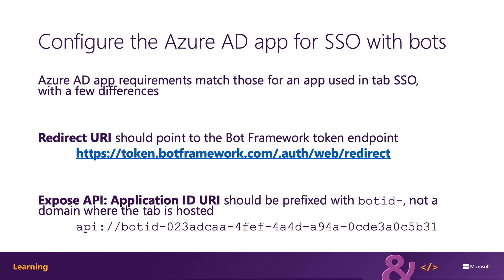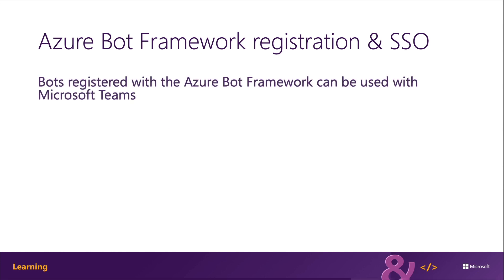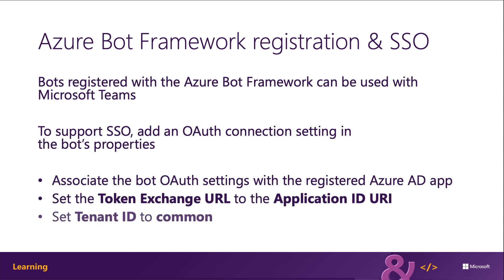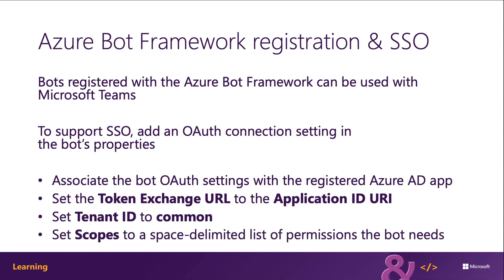For a bot to support SSO, you must update its OAuth connection settings. This process associates the bot with the authentication provider — in this case Azure AD — the Azure AD application associated with the bot, the bot application's ID URI, and all the permissions the bot needs to obtain the access token.